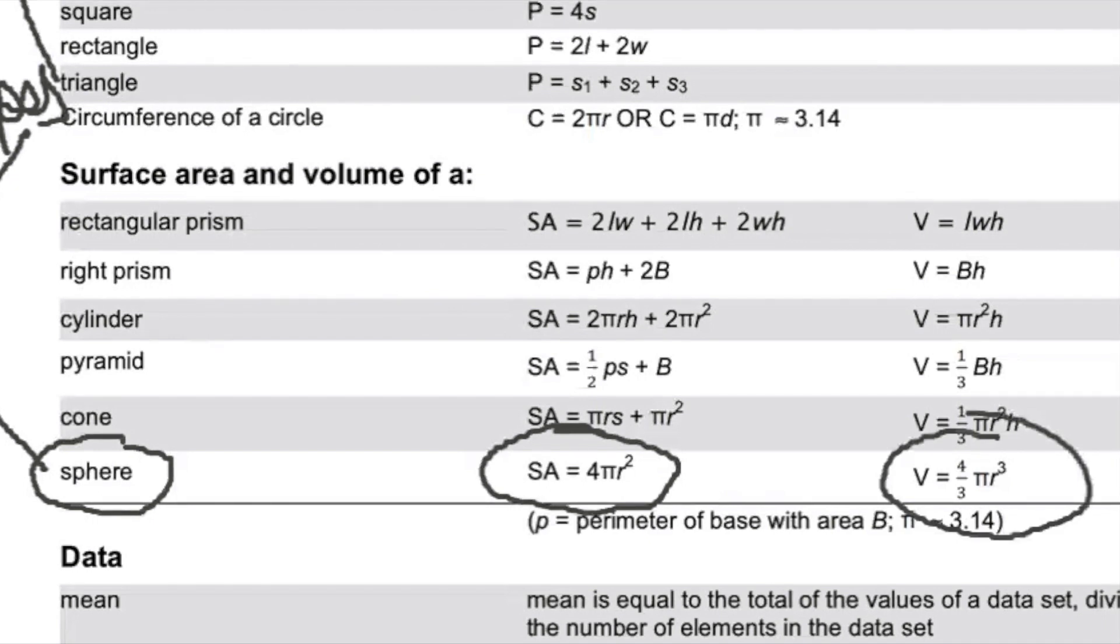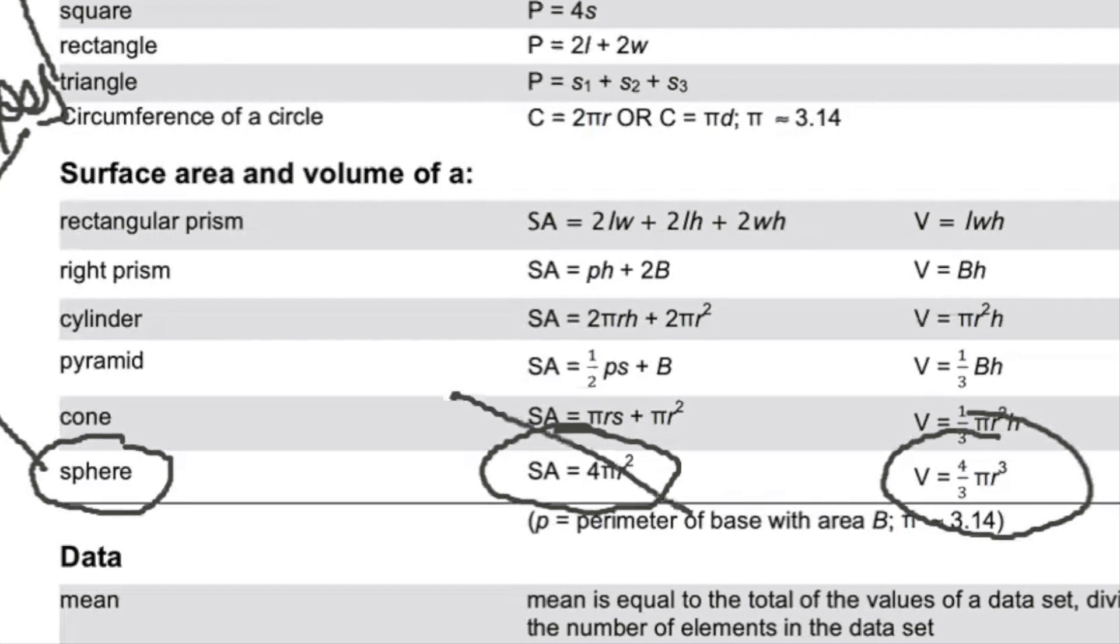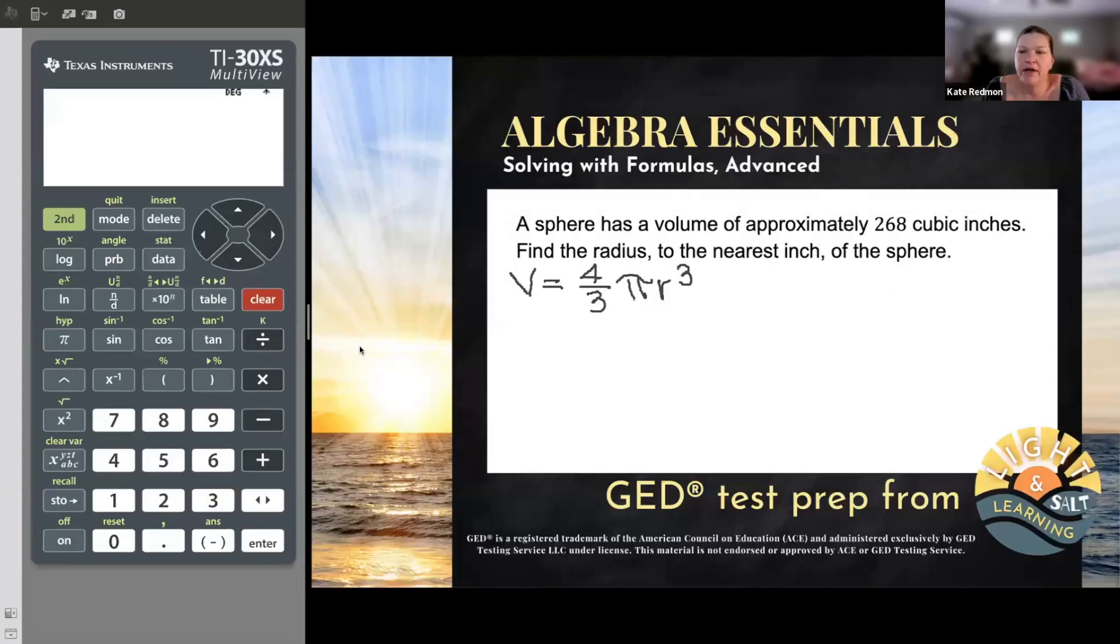So which one do we need here? Well, we were looking for the radius. They both have radius. But what were we given? We were given the volume. So let's use that volume formula, the one with the V. So that's what we need there. We need the formula V equals (4/3)πr³. Okay, now that we've got the formula, you also will want your GED calculator, your TI-30XS multi-view, which you will have every time you have a problem like this on the GED.